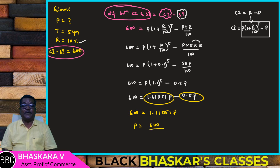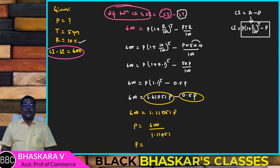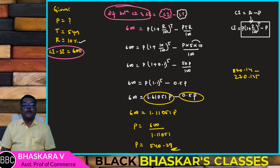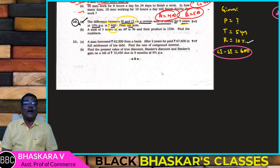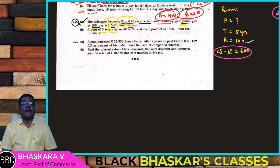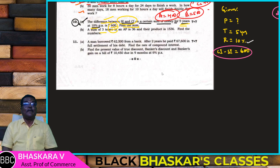So 600 equals P into 1.61051 minus 0.5P. Solving, P equals 600 divided by 0.11051, giving principal equals approximately 540.29. To summarize: the difference between simple interest and compound interest on a certain sum for 5 years at 10% per annum is 600. Find the sum — the answer is the principal.